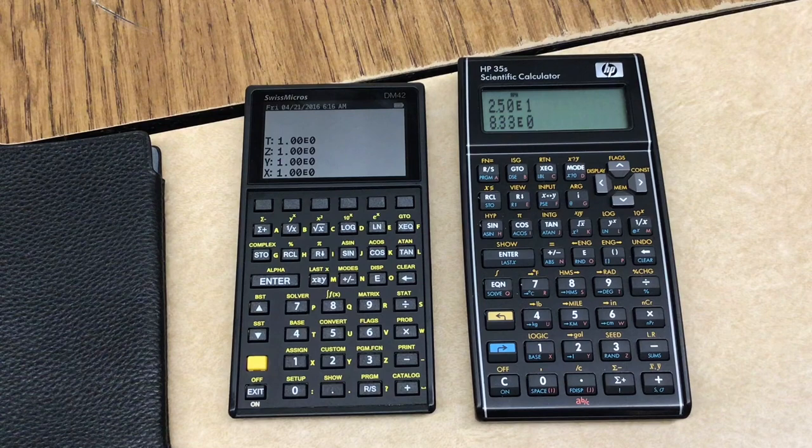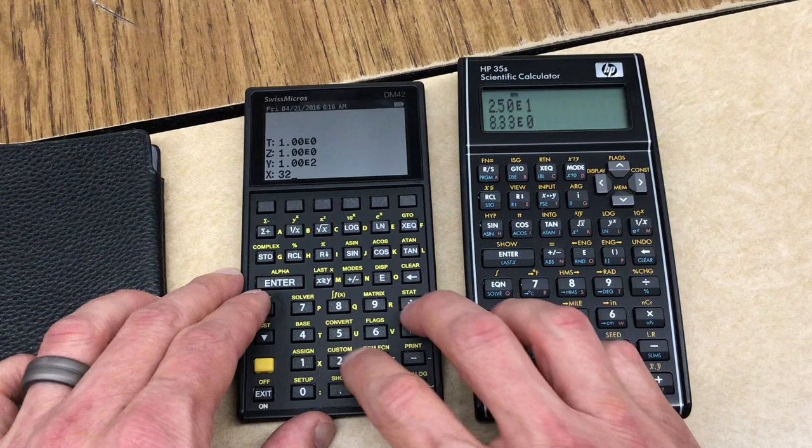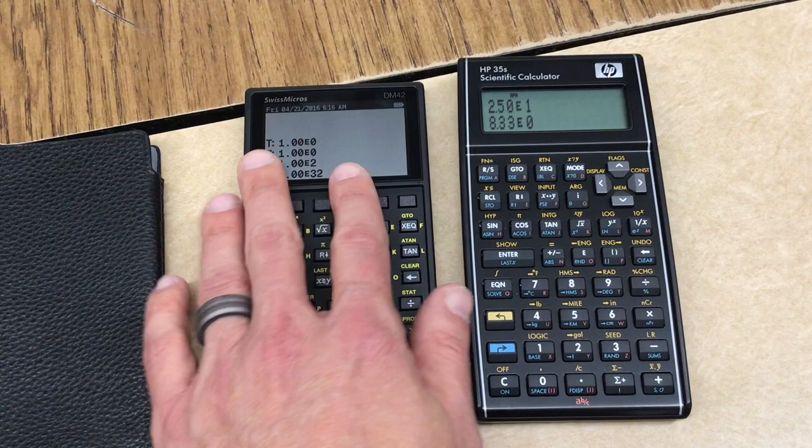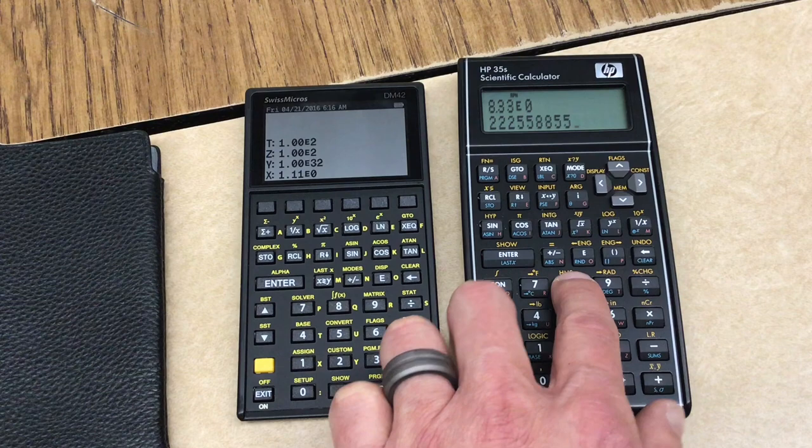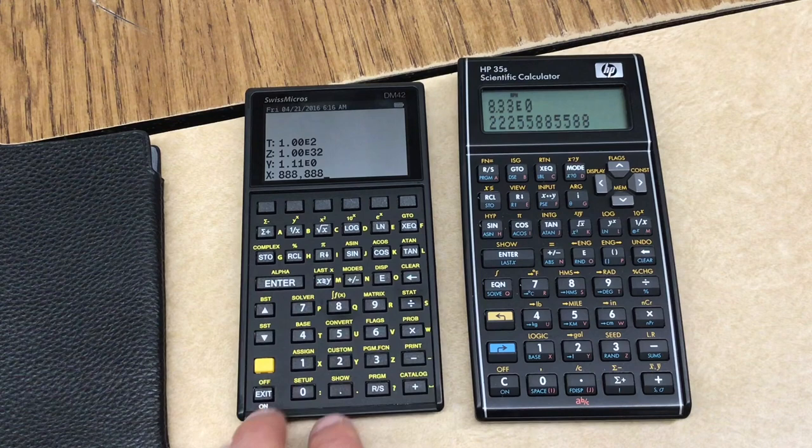And let me just type in a few: 25 enter two divide eight times 32, 10 to the X. So just some number punching. It's got a good feel and you can hear that kind of punch feel. This is a little more soft feel. This is a more hard feel.